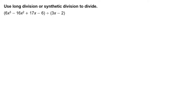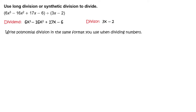Use long division or synthetic division to divide the quantity 6x cubed minus 16x squared plus 17x minus 6 divided by the quantity 3x minus 2. Note that the dividend is 6x cubed minus 16x squared plus 17x minus 6 and the divisor is 3x minus 2. Use long division — write polynomial division in the same format you use when dividing numbers.